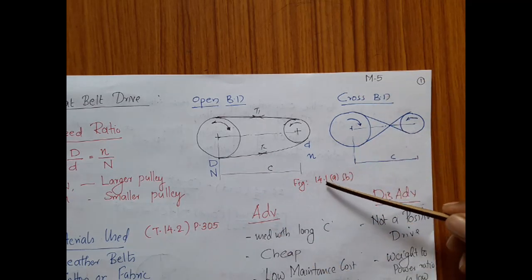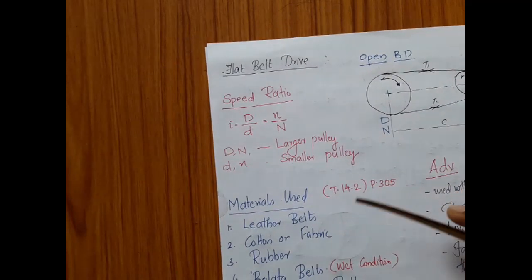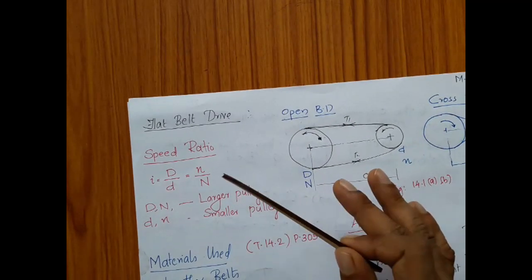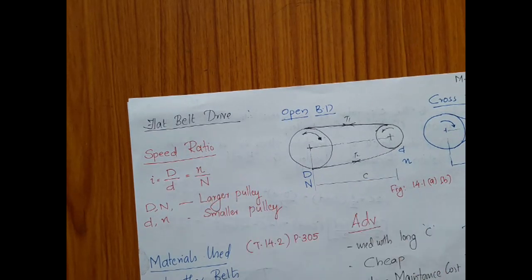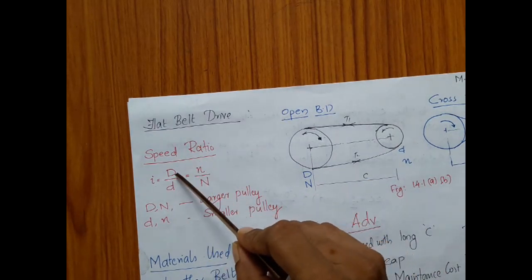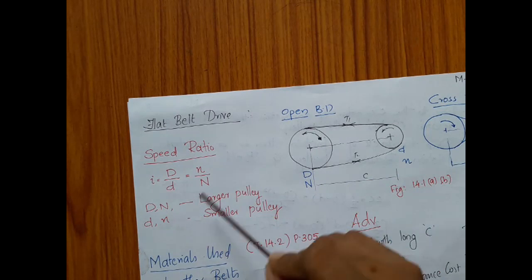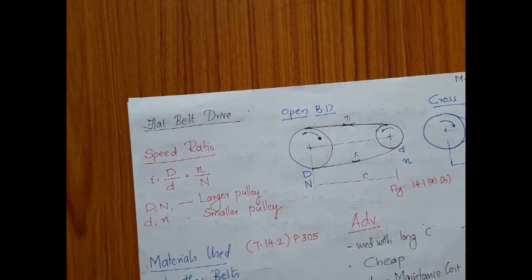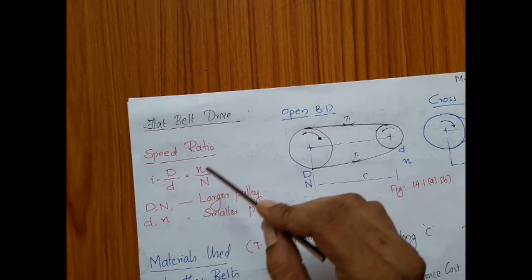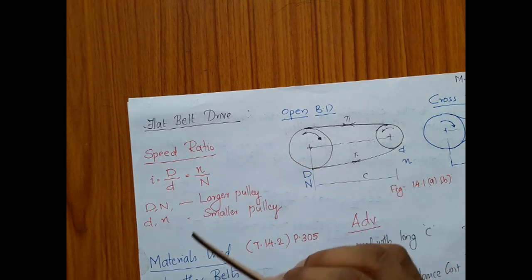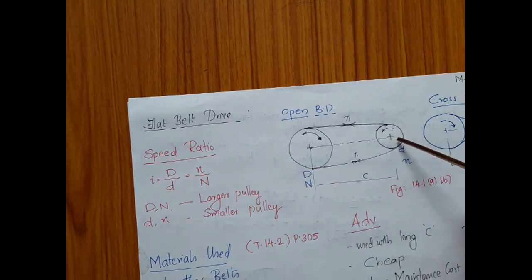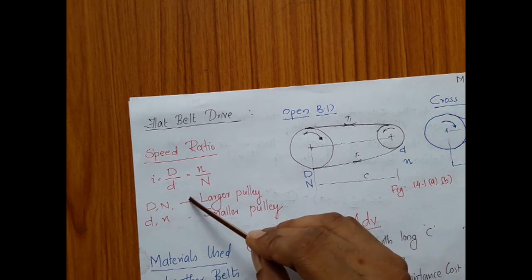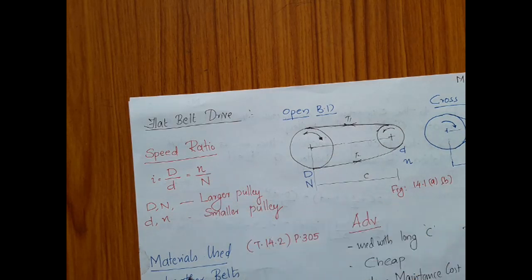Another important aspect in the design is the speed ratio, which is nothing but capital D divided by small d, and small n divided by capital N. Speed ratio is the ratio of the larger value by the smaller value. Here the speed of the smaller pulley is going to be higher compared to that of the larger pulley.